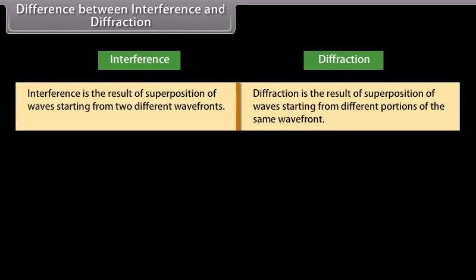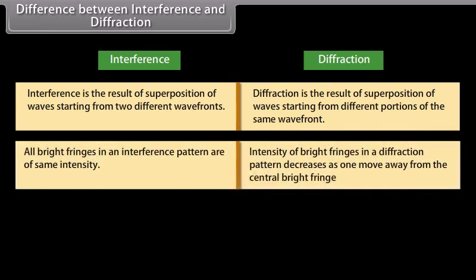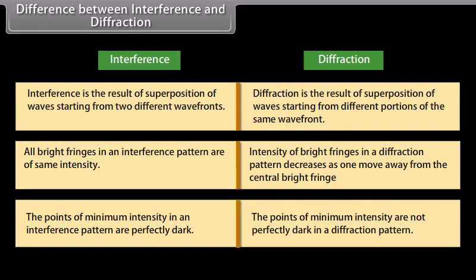Difference between interference and diffraction: interference is the result of superposition of waves starting from two different wavefronts. All bright fringes in an interference pattern are of the same intensity, whereas the intensity of brightness in a diffraction pattern decreases as one moves away from the central bright fringe. The points of minimum intensity in an interference pattern are perfectly dark, whereas the points of minimum intensity are not perfectly dark in a diffraction pattern.